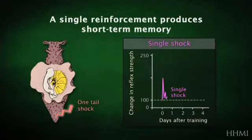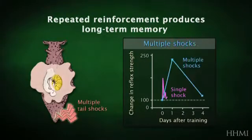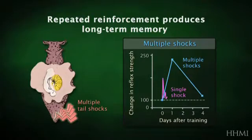But if we give the same stimulus four or five times, we get a memory that lasts a couple of days. So we have a short-term memory and a long-term memory, and we can now look at the difference between them.